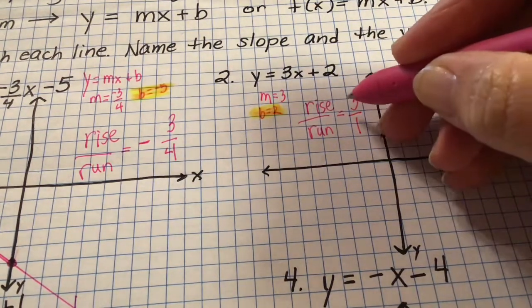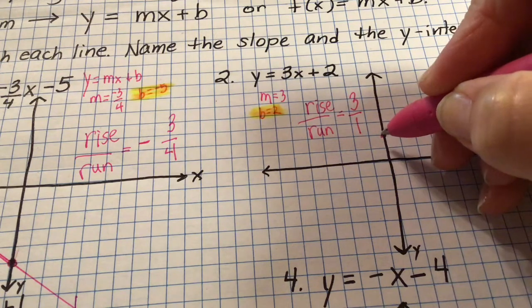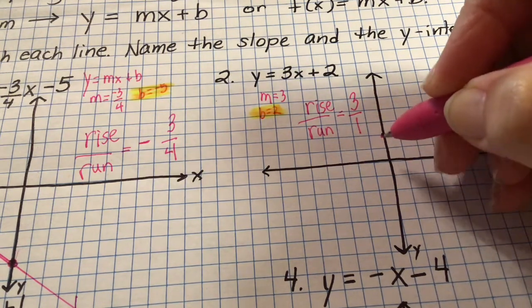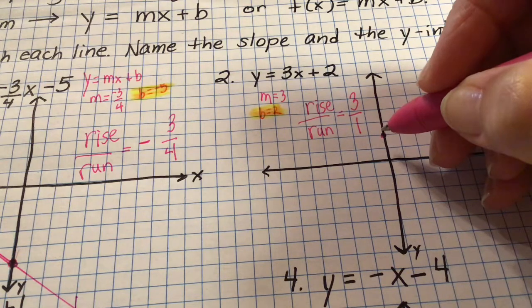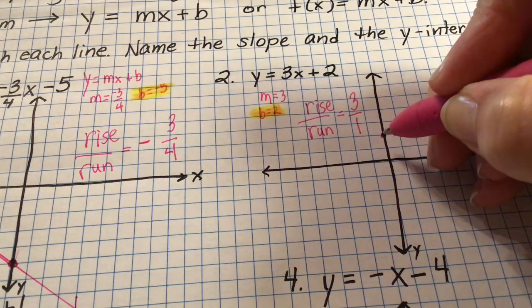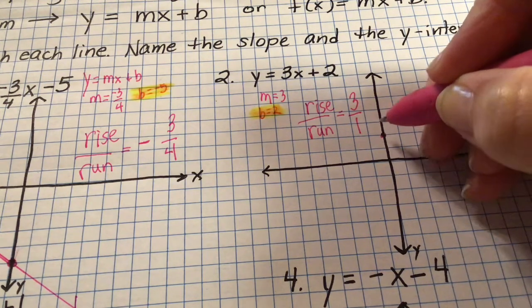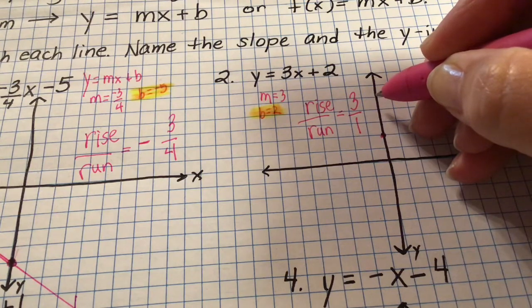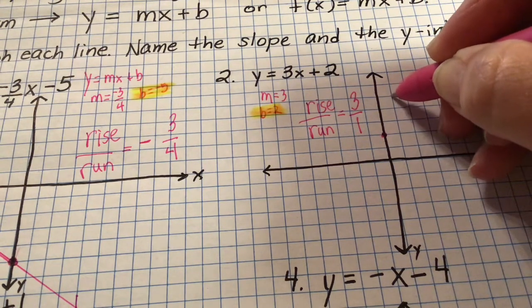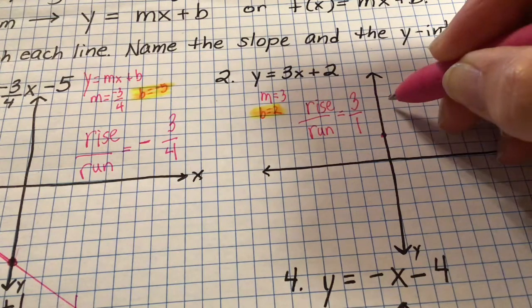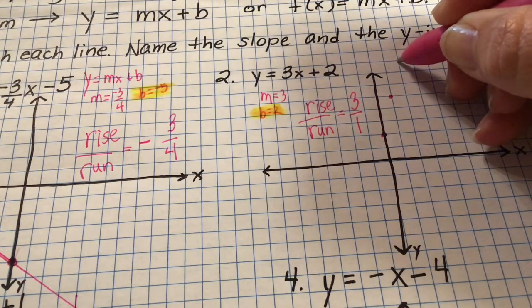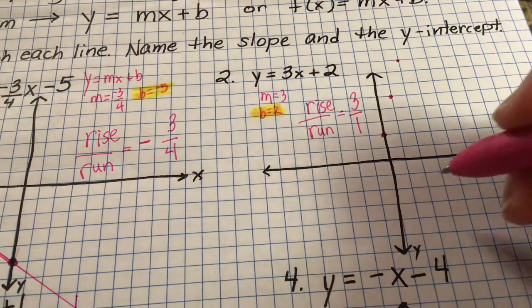So I rise three — one, two, three — and run one in a positive direction. I'll do that again: rise three and run one in a positive direction. You can also go down three and left one, since negative three over negative one equals positive three — that still gives you the correct slope.